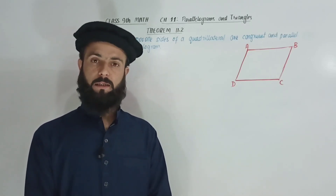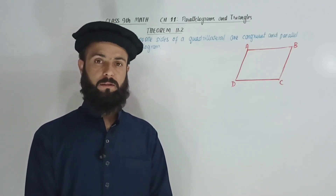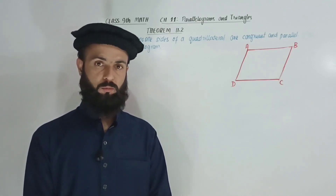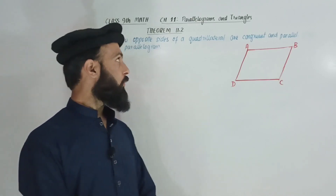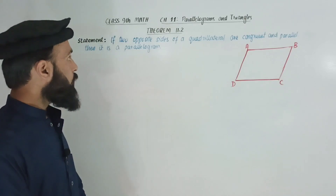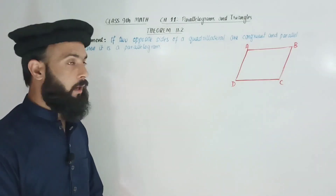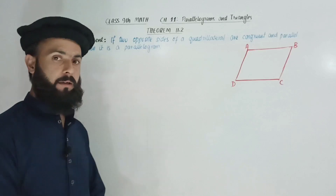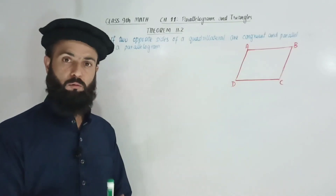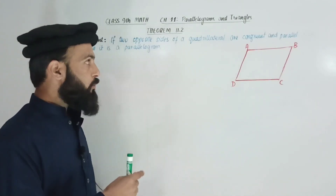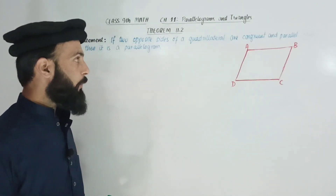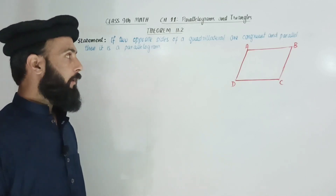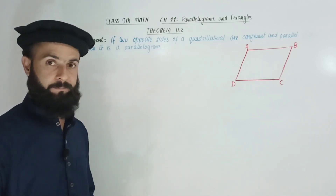In Class 9 Mathematics, Chapter 11, I will prove Theorem 11.2. The theorem statement is that if two opposite sides of a quadrilateral are congruent and parallel, then it is a parallelogram. If two opposite sides of a quadrilateral are parallel and congruent, then the quadrilateral is a parallelogram.